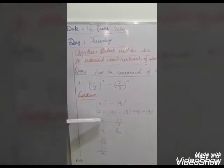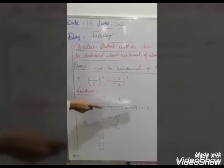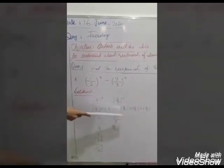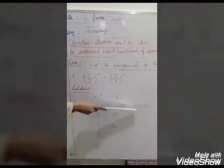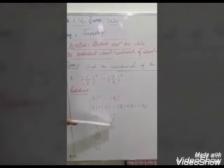2 times 2 is 4, 1 times 1 is 1. Then 3 times 3 is 9, and 9 times 3 is 27; 2 times 2 is 4, and 4 times 2 is 8. So the result is 27 by 8.